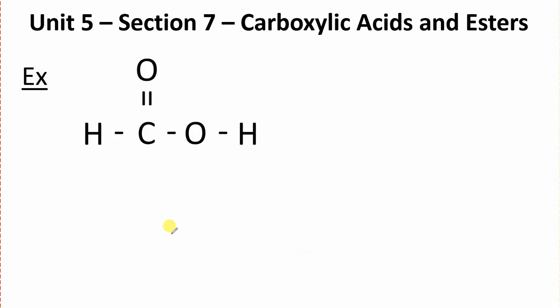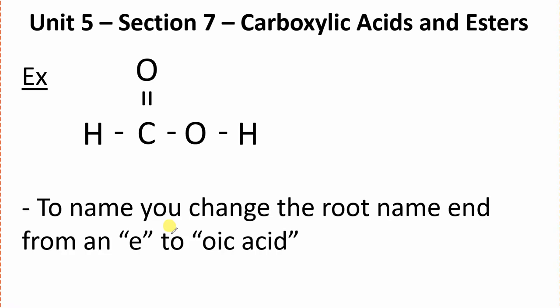Firstly here we have this example. This is going to be our easiest of all of them. If we're going to name this one, all we need to do is take the regular hydrocarbon name and change the E to oic acid. This one has one carbon in it, so our simplest hydrocarbon would be methane. We replace the E with oic acid, so this one becomes methanoic acid.